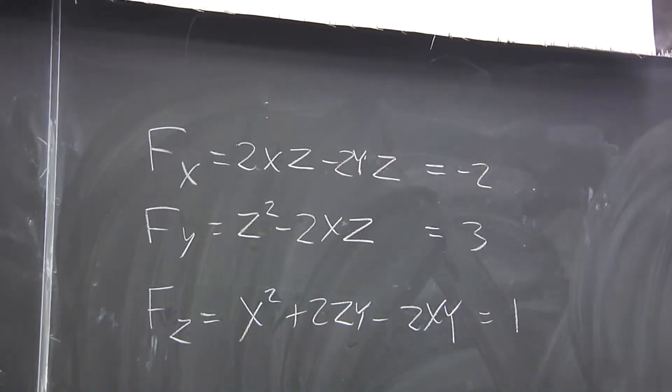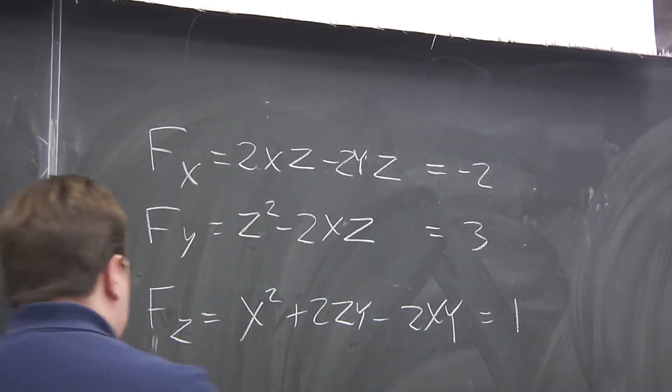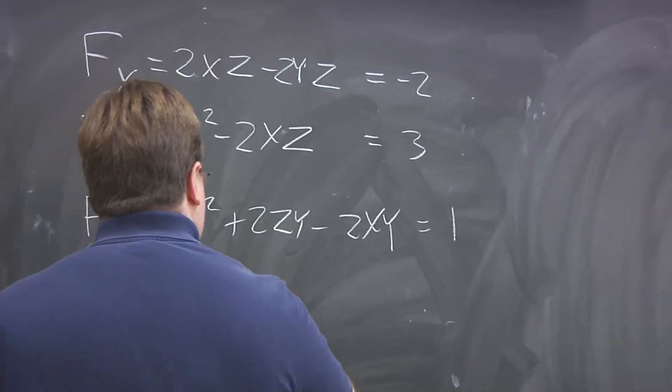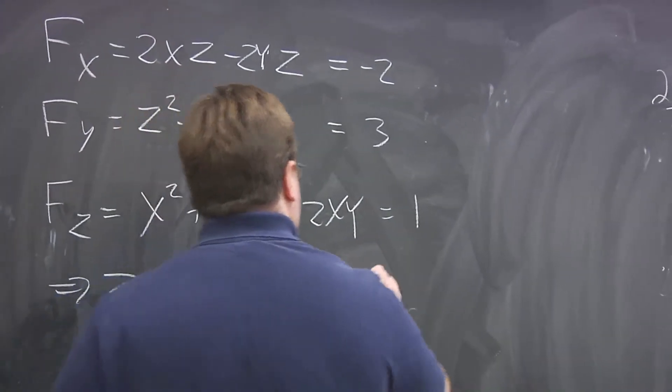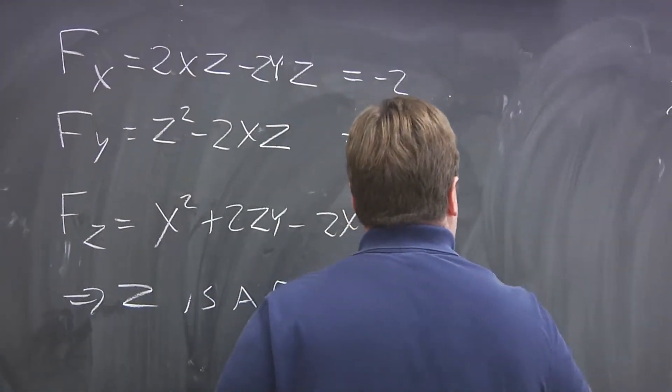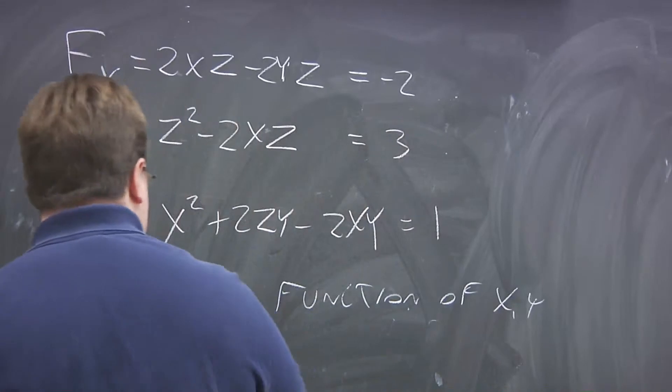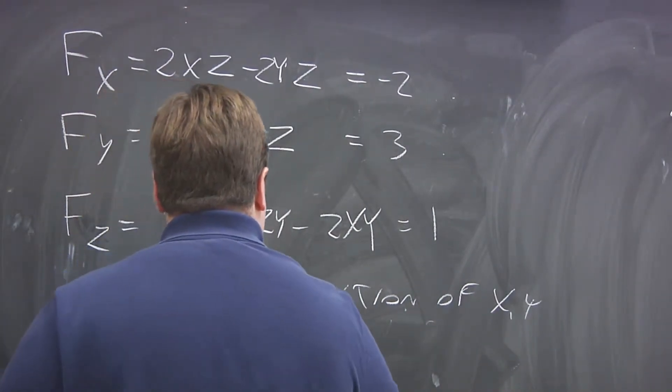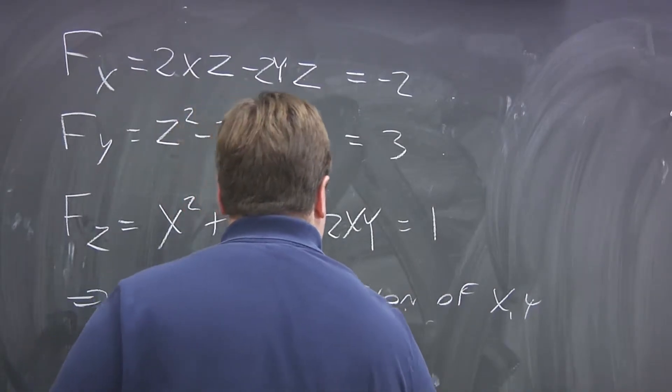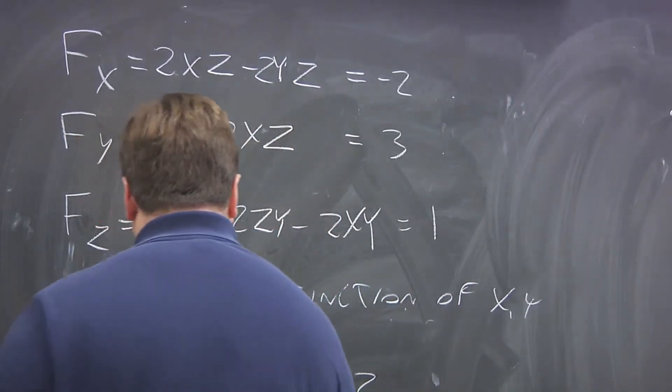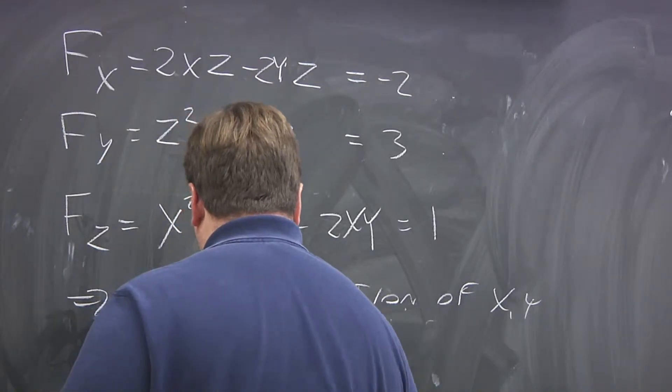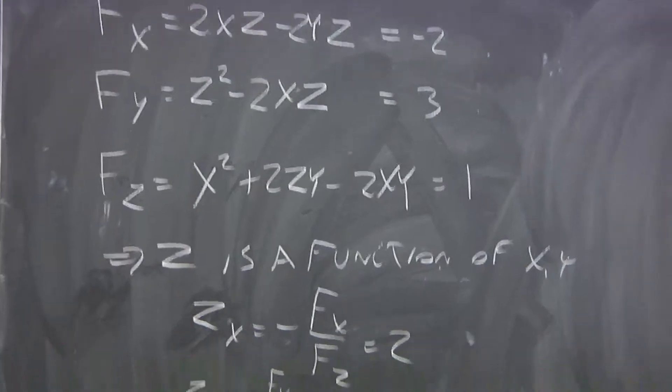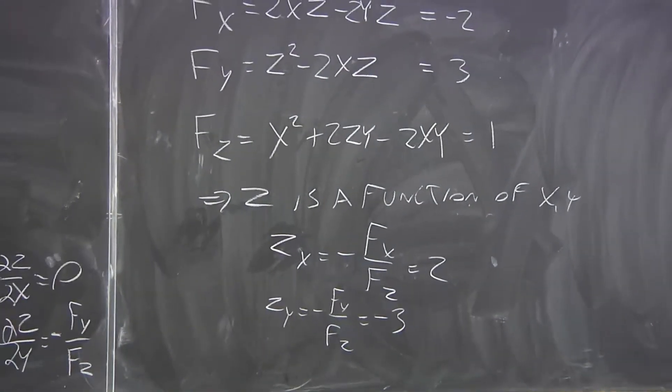With respect to Z is non-zero at this point. Then, the implicit function theorem is satisfied, so Z is a function of X and Y near this point, and ZX is minus FX over FZ is two. ZY is minus FY over FZ is minus three. It shows the rates of change at that point.